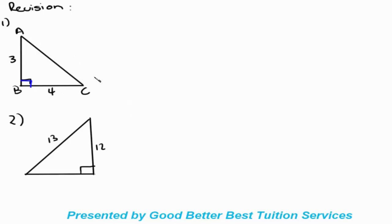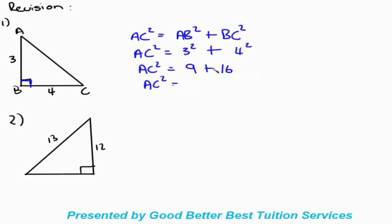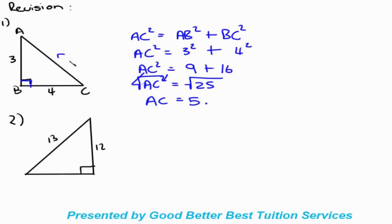Since we can follow the theorem of Pythagoras, we write: AC squared equals AB squared plus BC squared. AB is 3, so that's 3 squared, plus BC which is 4 squared. So AC squared equals 9 plus 16, which is 25. To get AC by itself we square root, so AC equals the square root of 25, which gives us 5.